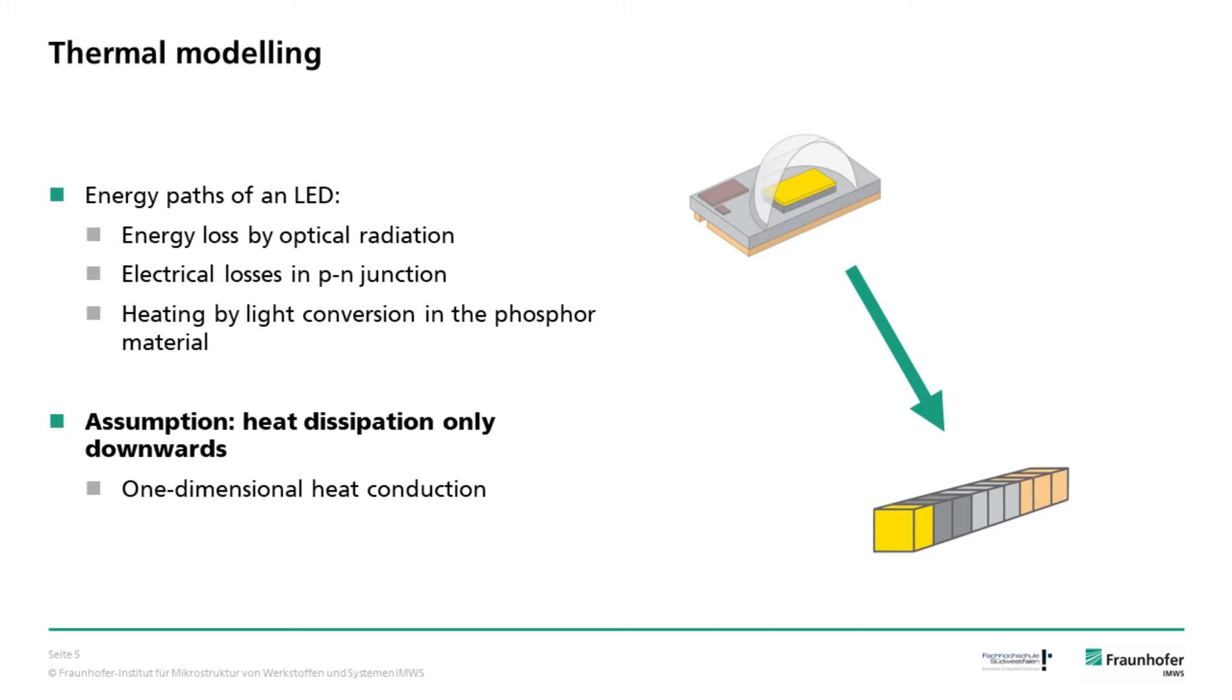The difference in energy, the so-called Stokes shift, is released as heat. To compensate for this heating, sufficient cooling is needed. Here we assume the heat is fully conducted away from the LED by a strictly one-dimensional heat path with the heat source at its beginning.